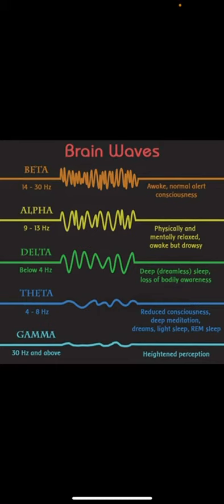Alpha becomes a little bit more wave-like, a little bit of space between it and is lower hertz. So now we're talking eight or nine to 13, physically and mentally relaxed, awake, but drowsy.